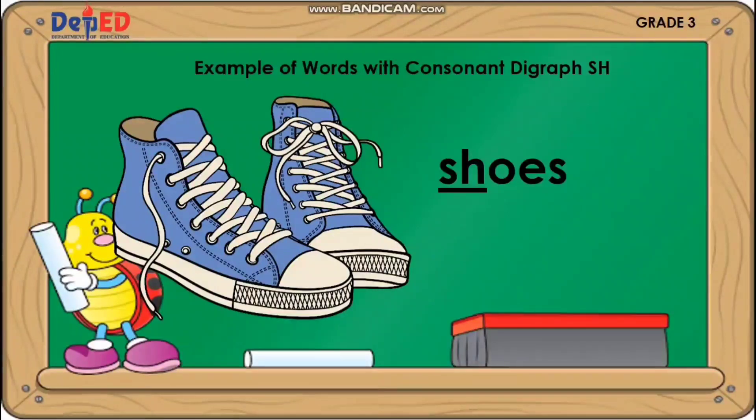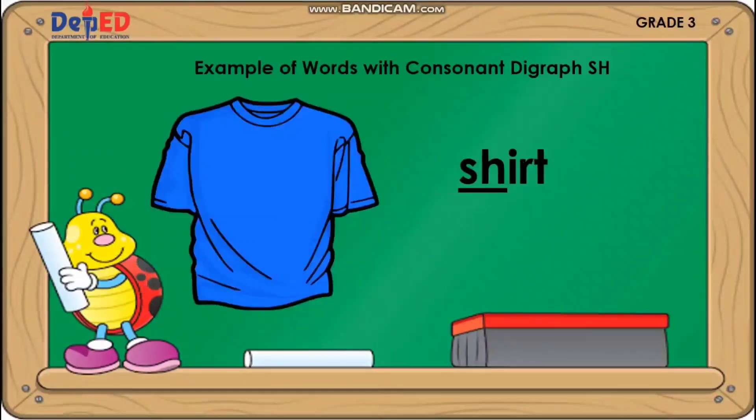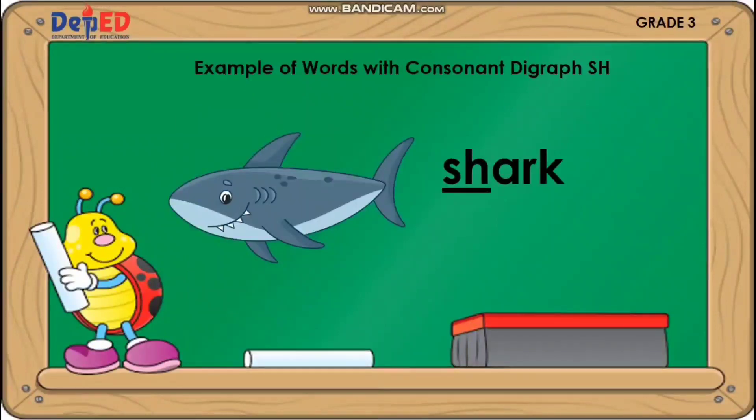Examples of words with consonant digraph SH: Shirt. Shark.